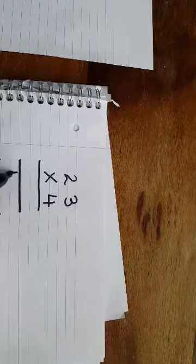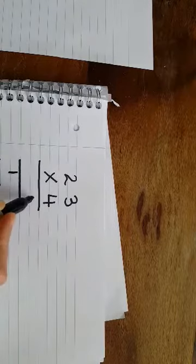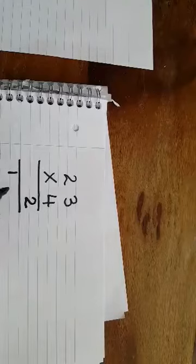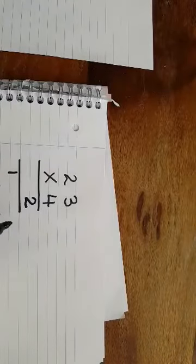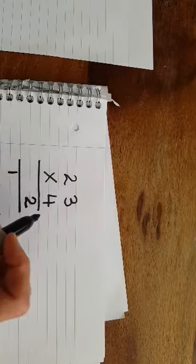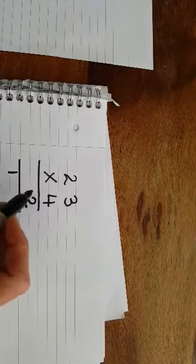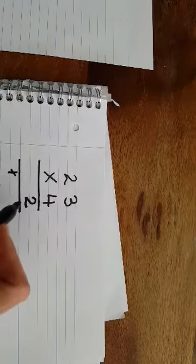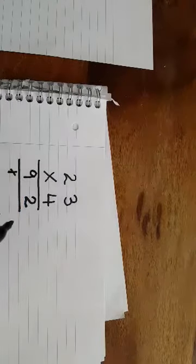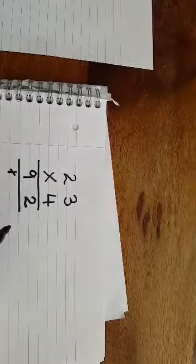So we put the 1 into the tens column and the 2 into the ones column, because 12 is made up of 1 ten and 2 ones. And then we do 4 times 2 is 8. We add on the 1 underneath and that brings it to 9. So the answer to 23 times 4 is 92.